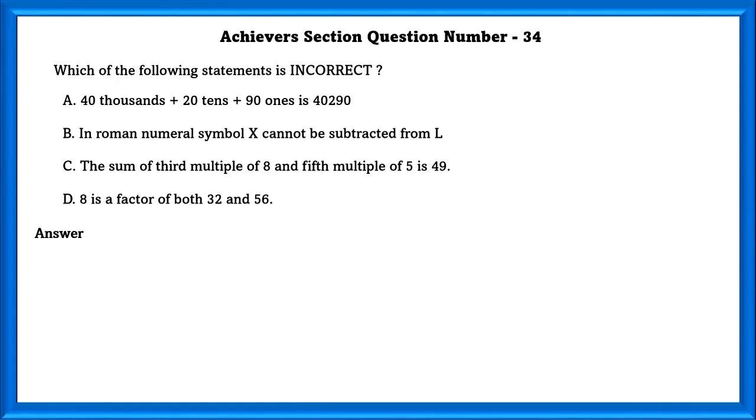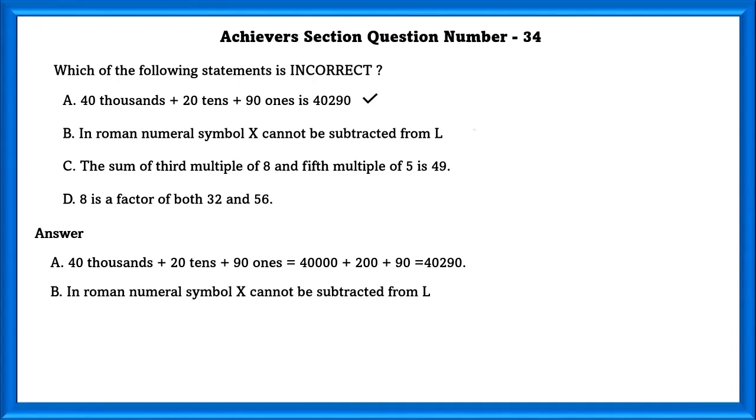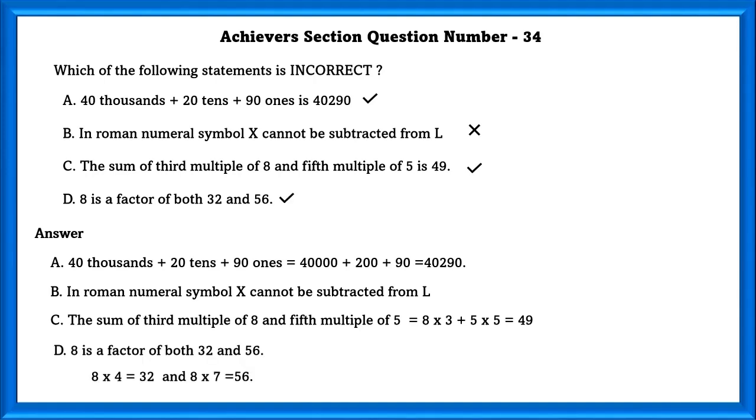Achievers section question number 34. Which of the following statements is incorrect? A. 40,000 plus 20 tens plus 91 is equal to 40,290. This is true. B. In Roman numerals, symbol X cannot be subtracted from L. Yes, this is wrong. Even though we know that this is wrong, let's just check out C and D options just to make sure we are not missing anything. C. The sum of third multiple of 8 and fifth multiple of 5 is 49. Yes, this is also true. D. 8 is a factor of both 32 and 56. Yes, this is also true. So the incorrect option is B.